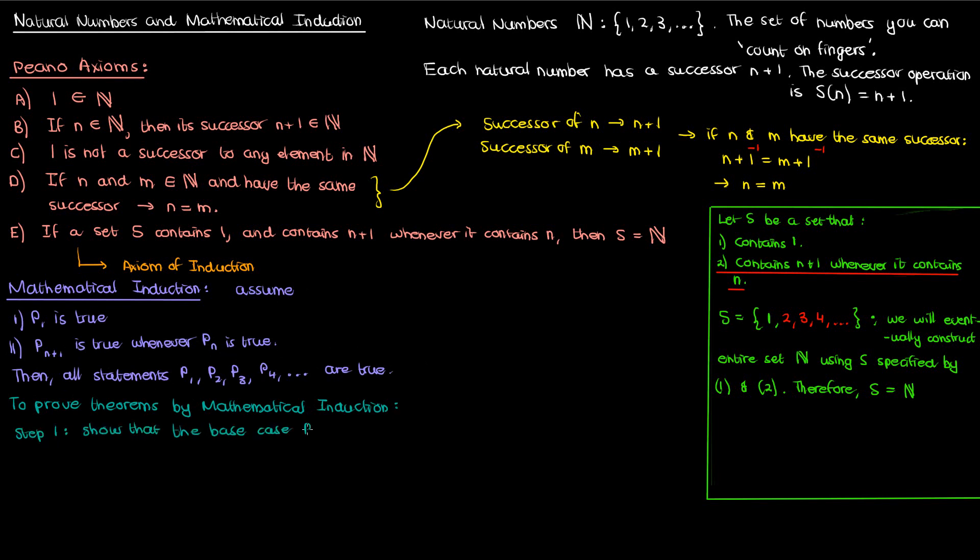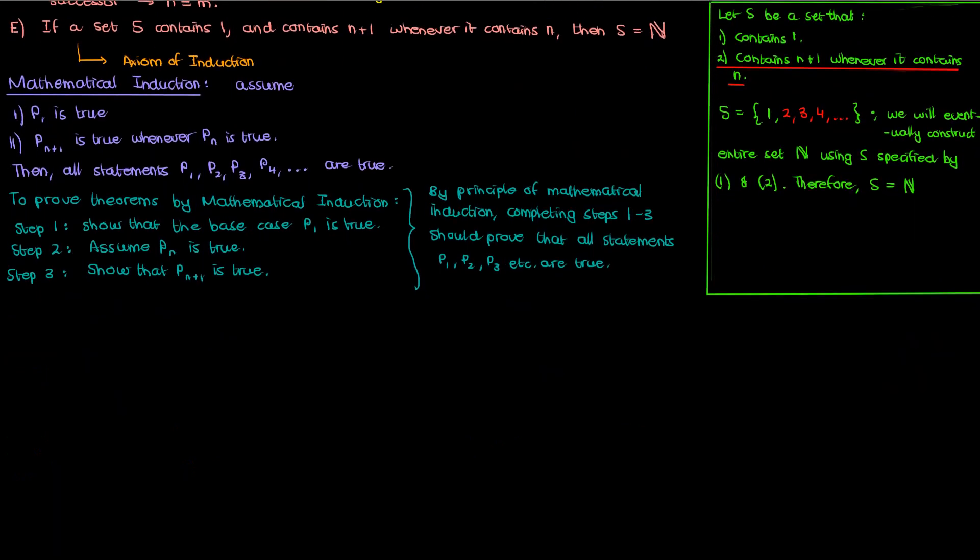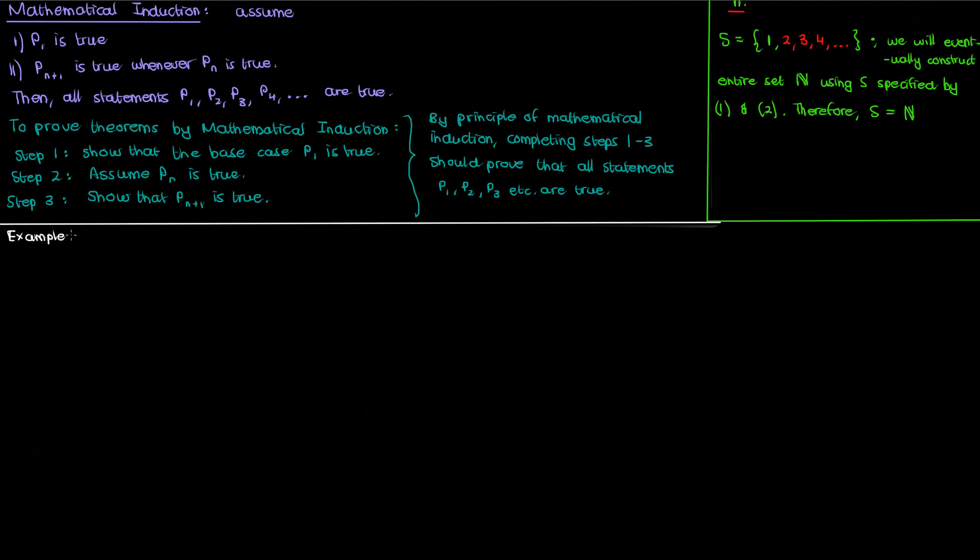So when proving anything by mathematical induction, there are three simple steps. The first step is to show that the base case, the statement P1 is true. The second step is to assume that PN is true, and the third step is to show that P sub N plus 1 is true given the assumption that PN is true. If you show the third step, you're done. According to the principle of math induction, you've proved that all the statements P1, P2, P3, etc. all these statements are true.